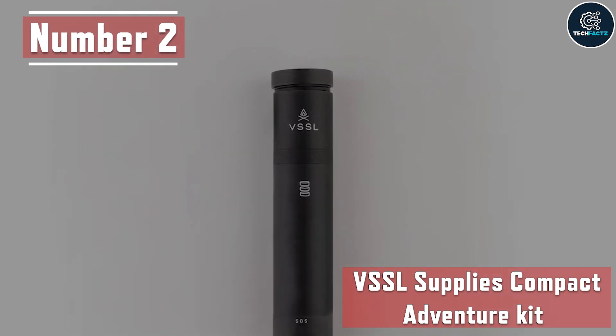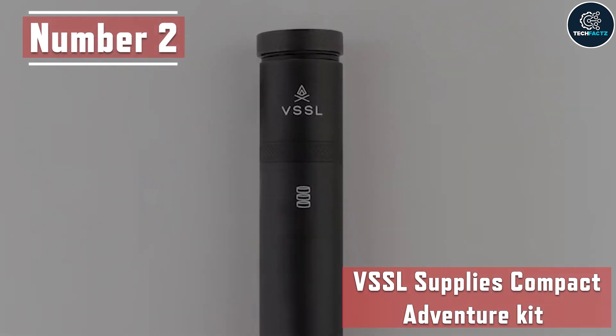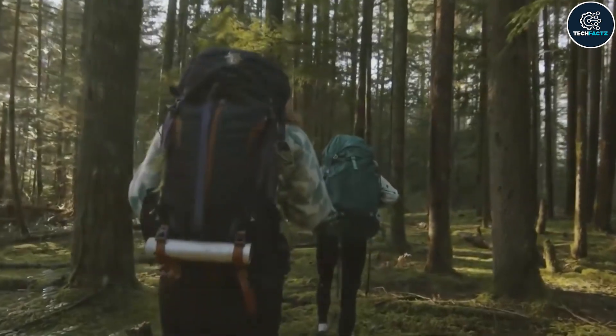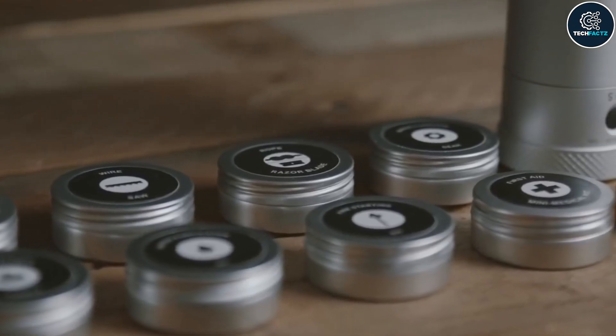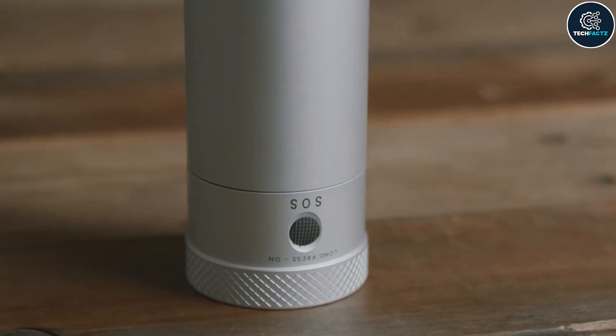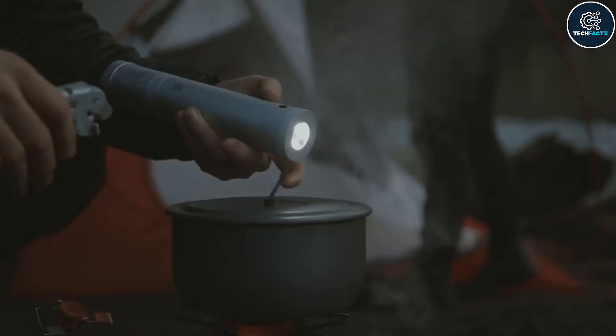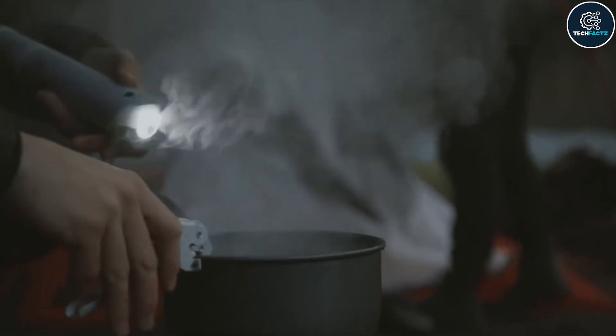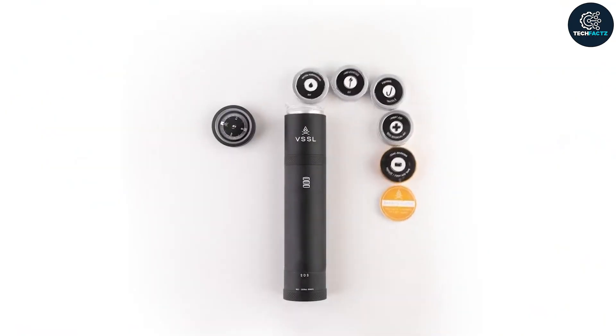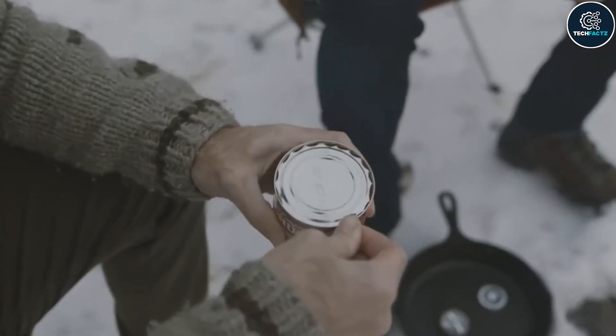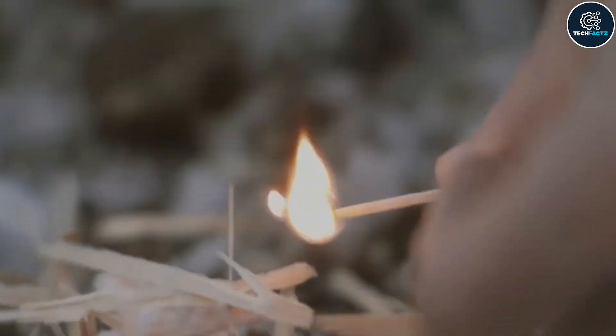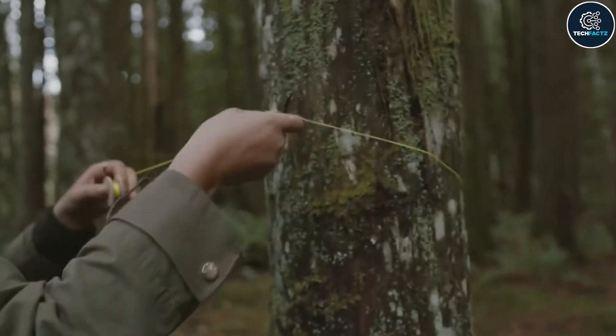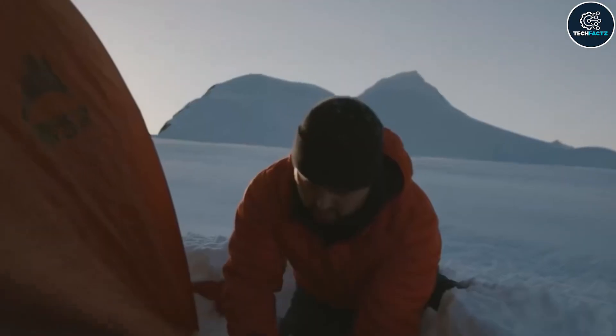Number 2: VSSL Supplies Compact Adventure Kit. Can a single flashlight replace all your camping gear? It's not possible with this product from the VSSL Supplies Compact Adventure Kit. Here, you'll find a dozen little boxes with camp essentials right inside this flashlight. The pack has 70 essential tools in total, such as a can opener, wire, saw, sewing kit, whistle, and waterproof matches. A marine-grade rope that can support 250 pounds is also included, and the small first aid kit will come in handy if something goes wrong.